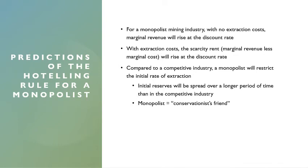What are the predictions of the Hoteling rule for a monopolist? For a monopolist mining industry with no extraction costs, marginal revenue will rise at the discount rate. With extraction costs, the scarcity rent — marginal revenue less marginal cost — will rise at the discount rate. Compared to a competitive industry, a monopolist will restrict the initial rate of extraction, just as in a regular monopoly versus perfectly competitive setting — producing less to achieve higher prices — and they do this in the non-renewable resource setting as well.